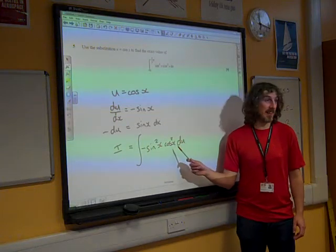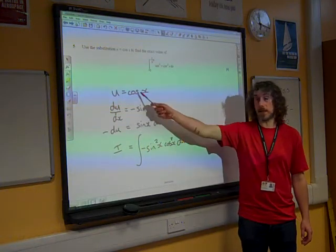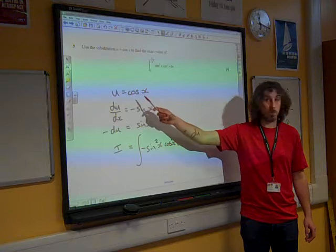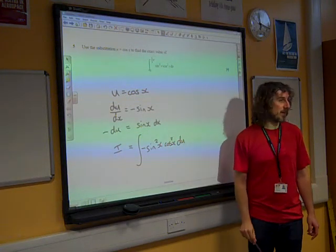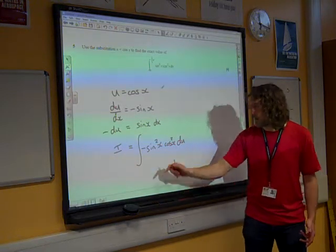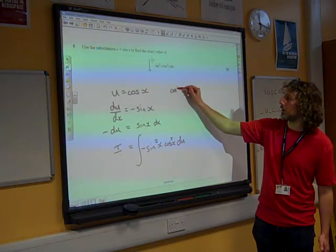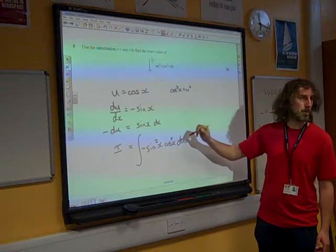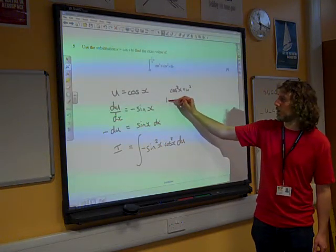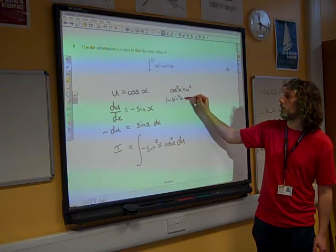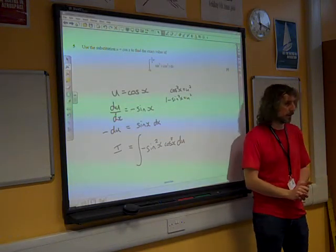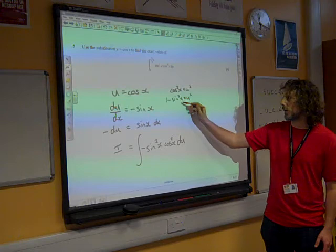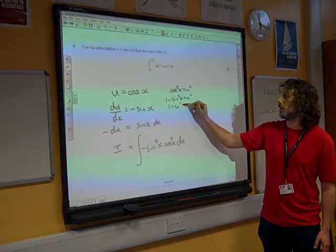Now, the cos squared x, that's easy isn't it? Because that's going to be u squared. We want to get this sin squared in terms of u as well. Well actually remember, if cos squared x is u squared, then 1 minus sin squared x is equal to u squared as well, isn't it? Cos squared is the same as 1 minus sin squared.